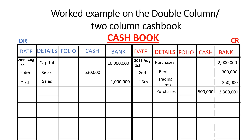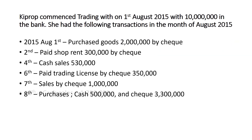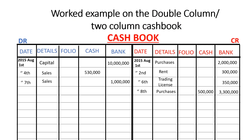On 12th August, cash sales worth 1,250,000 were recorded. This increases the amount of cash in the business, so we debit the cash account — posting 1,250,000 in the cash column on the debit side. The other item affected is sales.